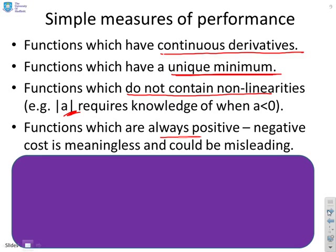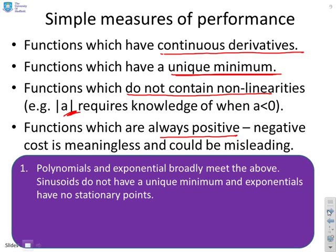So where does this lead to us? If you look at polynomials and exponentials, you'll find they broadly meet the four criteria that I've put above. They have continuous derivatives, if they have minimum they're unique, they're not nonlinear. They can be always positive, we'll get to that in a minute. Things like sinusoids do not have a unique minimum, so we don't really want to deal with sinusoids, because we have a lot of minimum then. Exponentials actually have no stationary points, so we might want to exclude them.